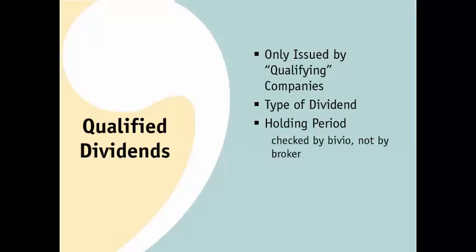Bivio runs a holding period check based on information entered on the ex-dividend page that you will complete in a minute. It's important to understand that brokers don't have to run this check — all they have to do is tell you if a dividend is eligible to be qualified. You may find that the amount of qualified dividends reported by Bivio is different from what your broker shows.